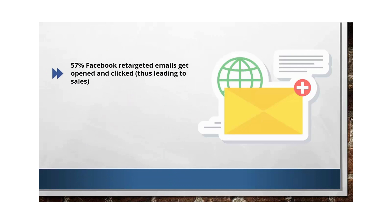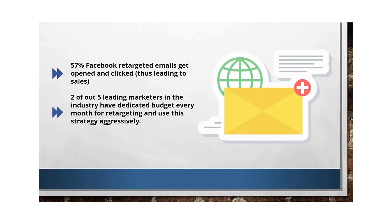Because you do retargeting with these crazy little techniques, you can hijack your competition's traffic and sales, and they won't have any clue how they lost customers. Number four: 57% of Facebook retargeted emails get opened and clicked, thus leading to sales. Number five: 2 out of 5 leading marketers in the industry have a dedicated budget every month for retargeting. These are the top 1% — they understand conversions, leads, and sales, and the cutting edge technology to analyze their conversions. You have to grow with the time and understand what's new and happening now.